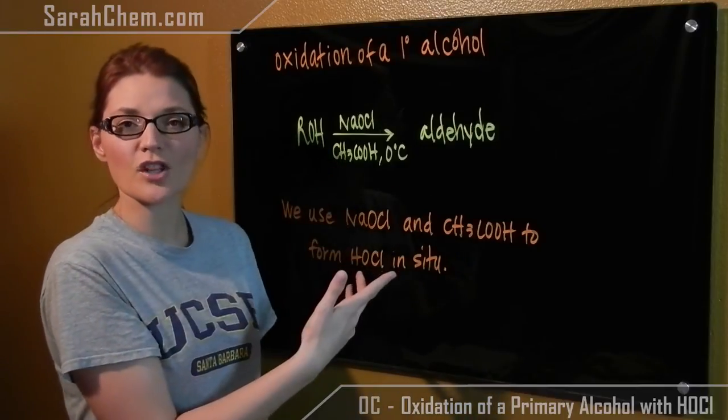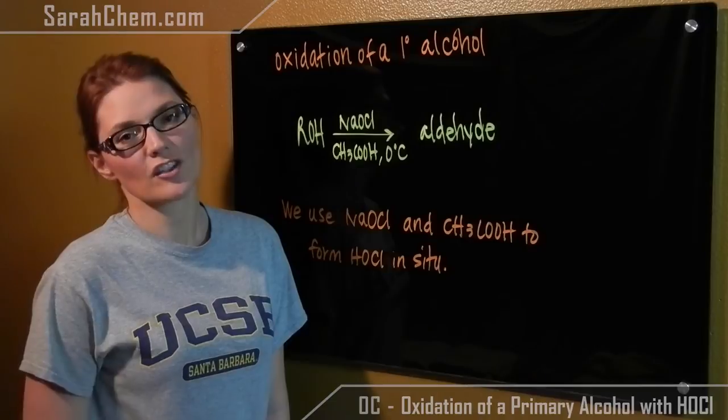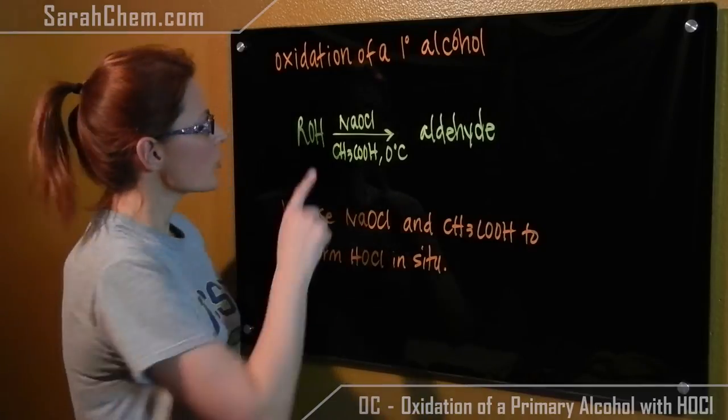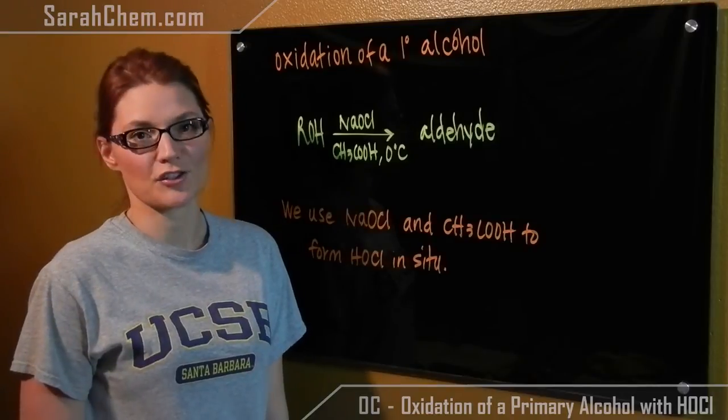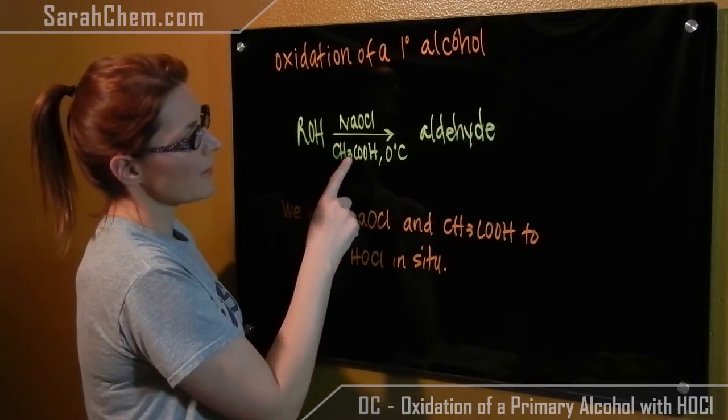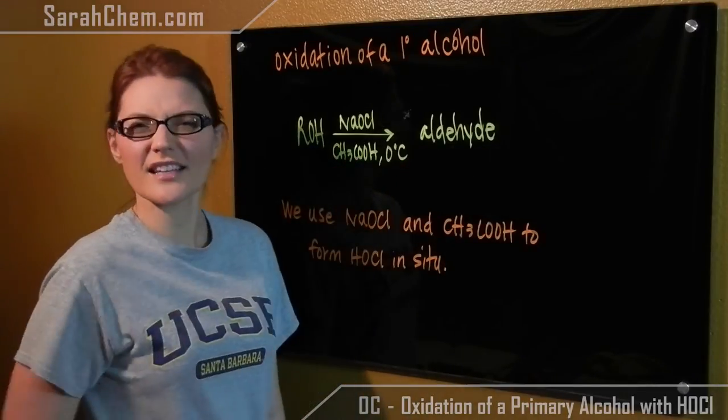You'll notice there's no HOCl written over that arrow, and that's because HOCl is really unstable. So we're going to use these two reagents here in order to make HOCl in situ. When this reaction happens, we're going to form an aldehyde. Let's take a look at the mechanism.